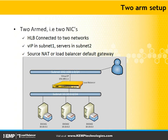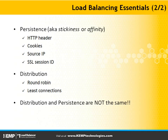If you have a two-arm setup, the load balancer will have two network interfaces. One is connected to the server VLAN where the Exchange servers are located, and one is connected to the client VLAN where the clients are located. Source NAT or load balancer default gateway are the options for routing your network packets.